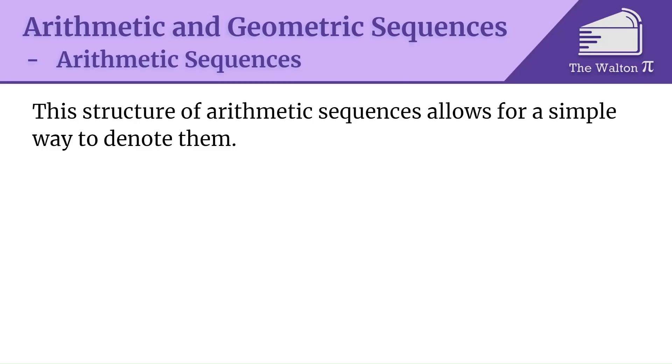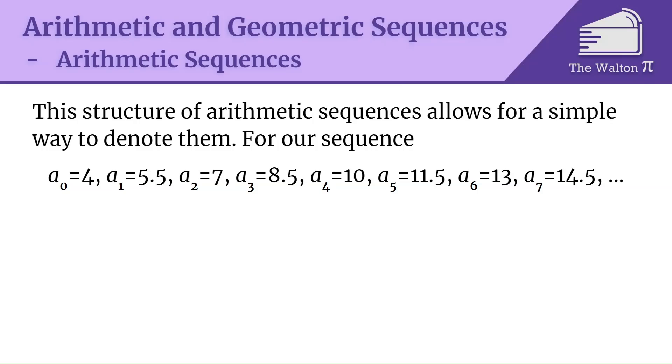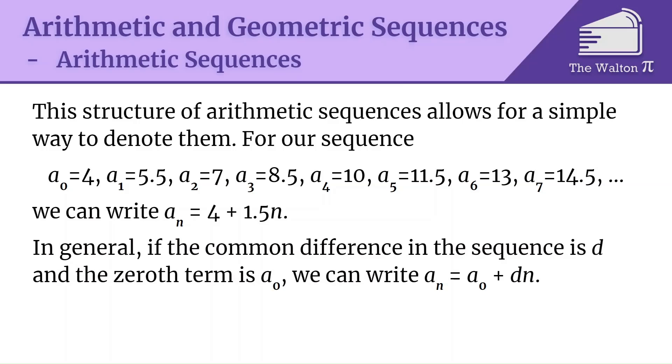This structure of arithmetic sequences, namely that they have a common difference, allows for a simple way to denote them. For our sequence a0 is 4, a1 is 5.5, and so on, we can write a_n is 4 plus 1.5n. In general, if the common difference in the sequence is d, and the 0th term is a0, we can write a_n is a0 plus dn. Here a0 is 4, and d is 1.5, our common difference is 1.5, so we have a_n is 4, that's our a0 value, plus 1.5, our d value, times n.